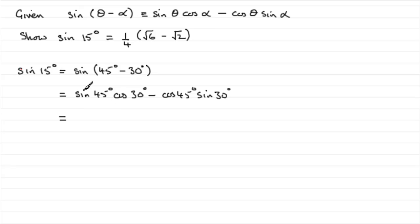Now, as I said earlier, sine of 45, cos of 30, cos of 45 and sine of 30 are all well known results you should know. You might have a calculator that gives you these values, but nonetheless you should know them.